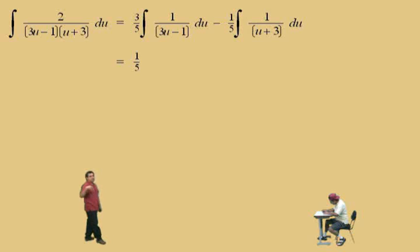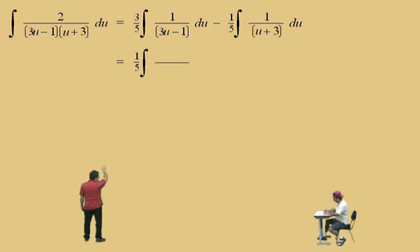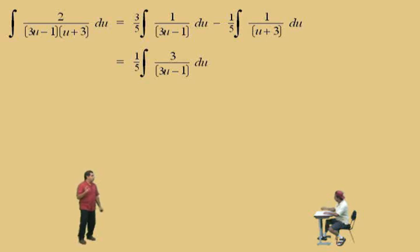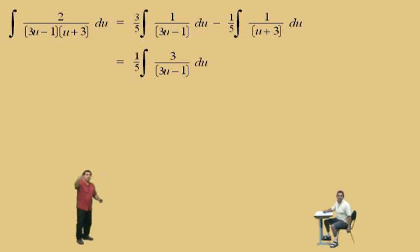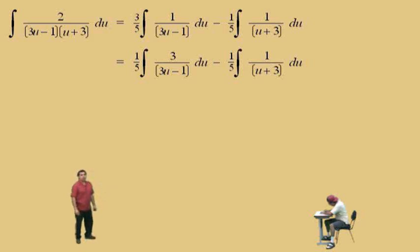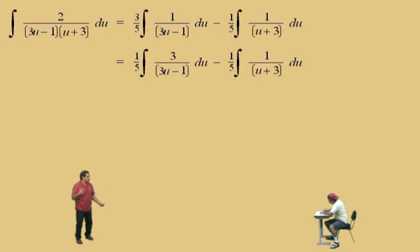Now we're going to use a technique to integrate three-fifths times the integral of 1 over 3u minus 1. You could do another substitution by letting v equal 3u minus 1, but we can avoid that. What I'm going to do is take that 3 from the three-fifths and put it on top of 3u minus 1, because this puts it right into the form of a natural log integral. The integral of 3 over 3u minus 1 du is the natural log of |3u minus 1|, because the derivative of 3u minus 1 is 3 du — it's like integrating 1 over u. Similarly, 1 over u plus 3 is also a natural log integral since the derivative of u plus 3 is 1 du.